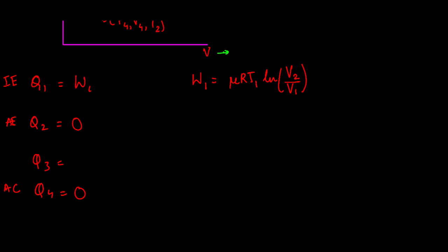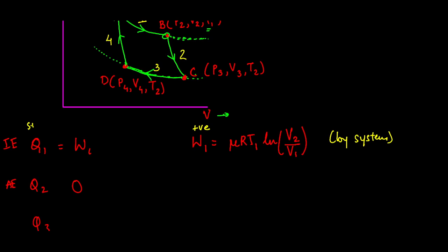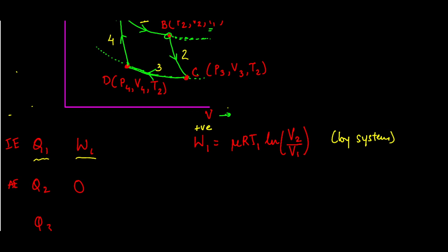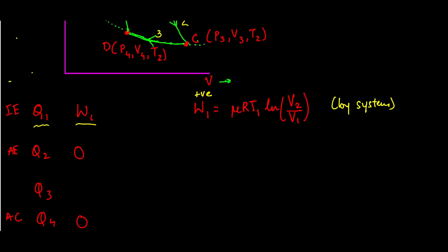In step 1, isothermal expansion from A to B, volume is increasing, so work is done by the system — this is positive work W1. We are only talking about step 1 here, not the whole cycle. In an isothermal process, Q1 equals W1, which is positive — the heat is absorbed by the system.